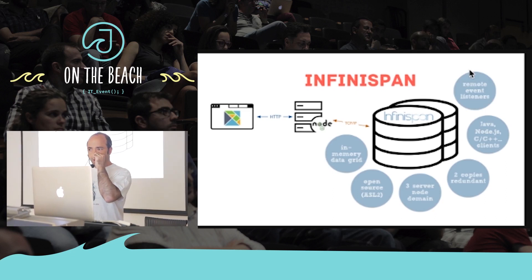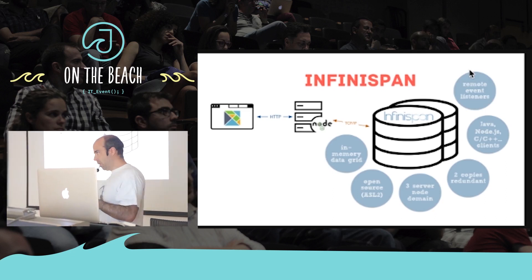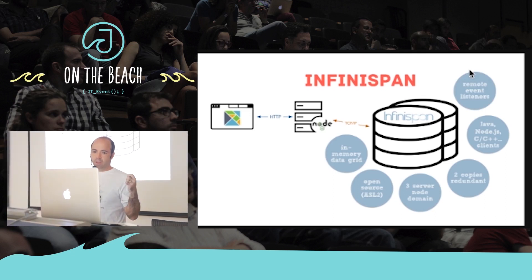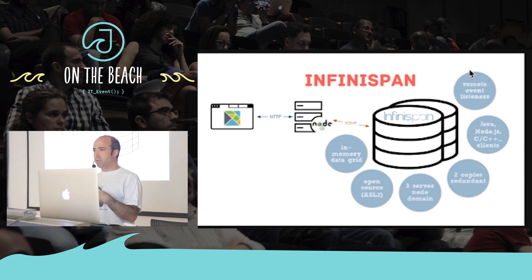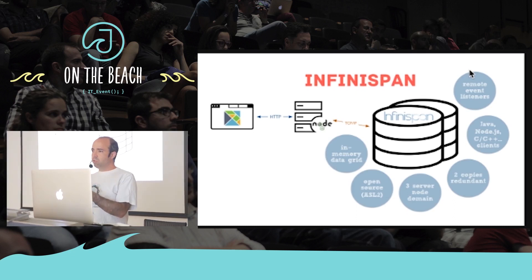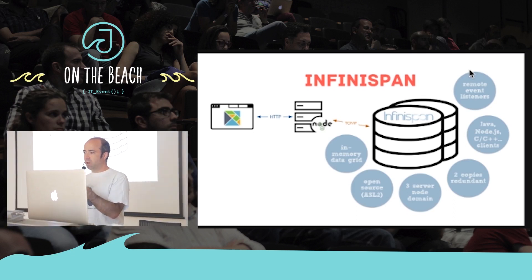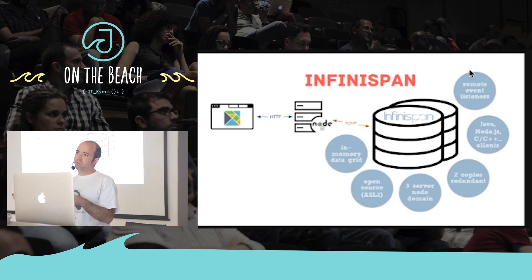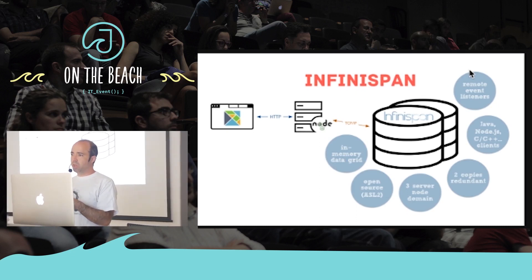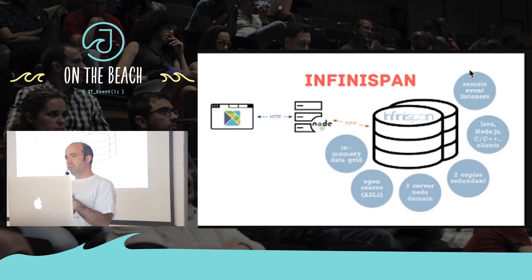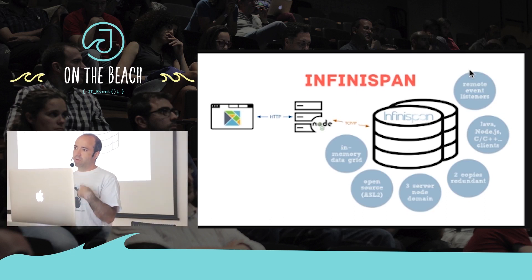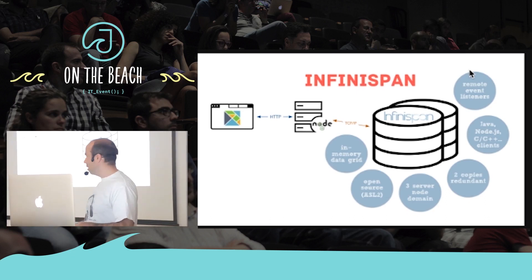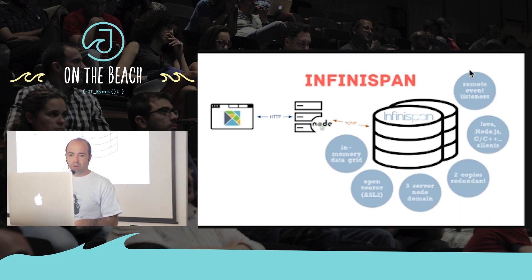From an FRP perspective, one of the cool things we added in the last year or two is the ability to attach remote listeners. As your data changes in the backend, you can attach remote listeners to find out what's changed. If there are new entries coming in, you'll get an event. If there are any changes to the data, you'll get an event. I consider this a very FRP-friendly architecture.